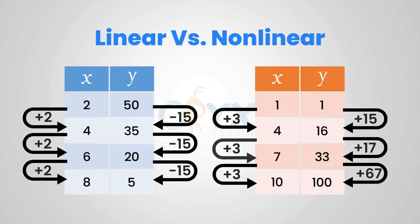Looking at the table on the left, we can see that the y-values decrease each time by 15 — from 50 to 35, from 20 to 5. The x-values increase each time by 2, going from 2 to 4, 4 to 6, and 6 to 8. Therefore, the function on the left has a constant rate of change of negative 15 over 2, and therefore it is a linear function.